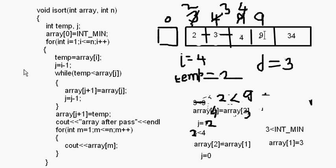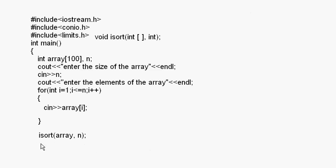That is how insertion sorting works. The key concept is INT_MIN at the zeroth position, and array elements always start from index 1. Understand the while loop logic carefully. Back in the main function, after calling isort, display the sorted array with a for loop. That concludes the session on insertion sorting.